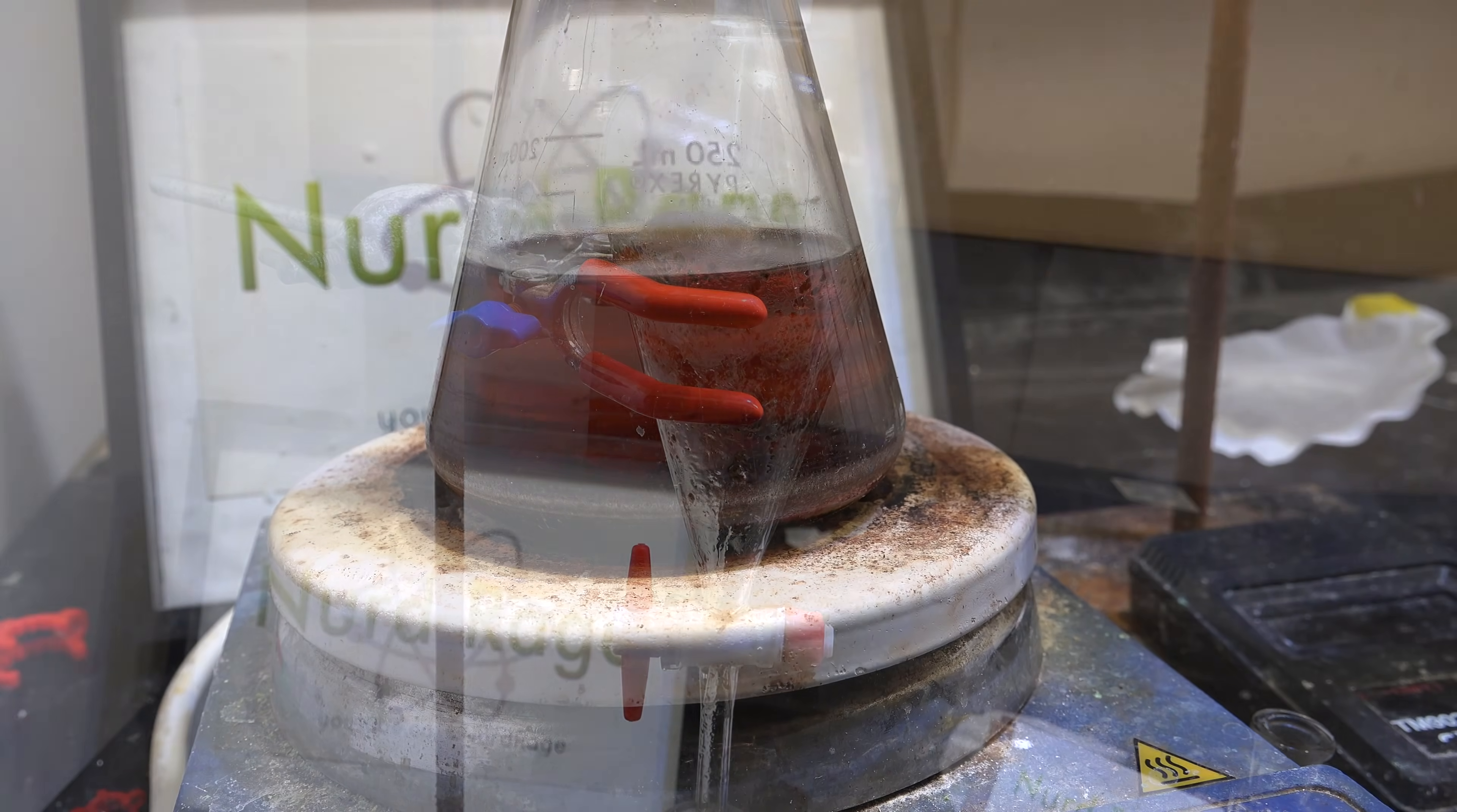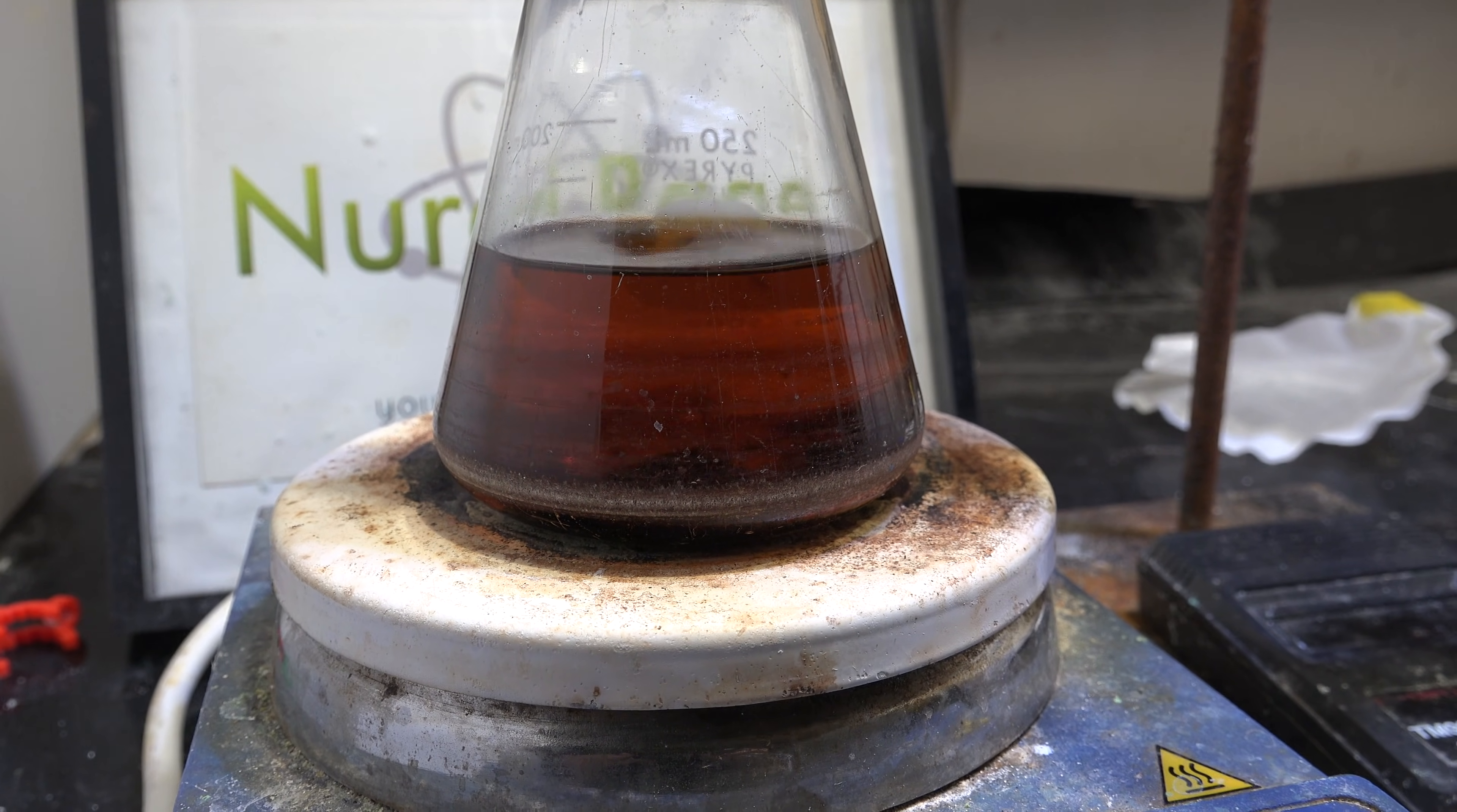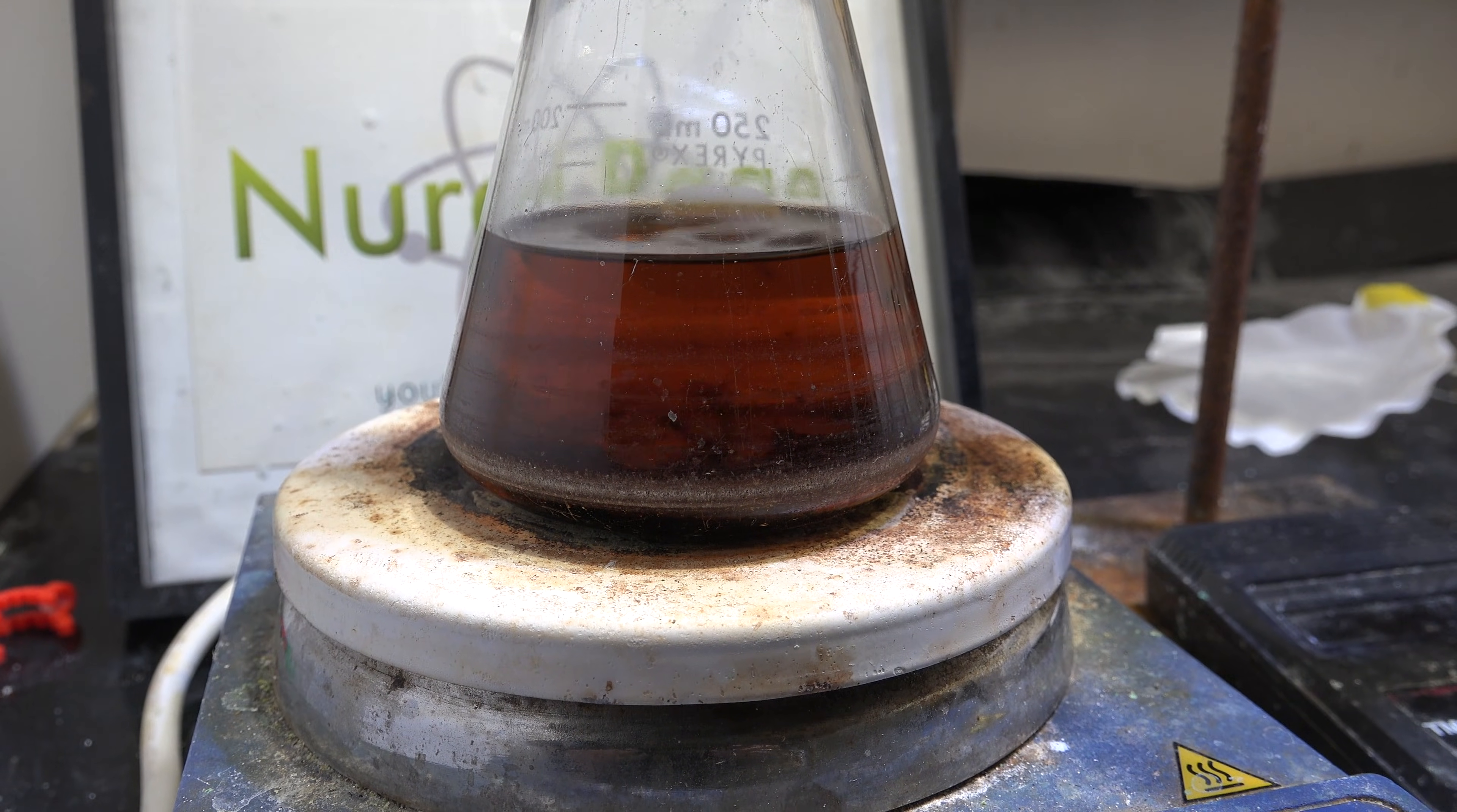And there it is, crude bromohexane. Now our bromohexane is somewhat impure since it wasn't automatically distilled like in bromoethane. So we'll need to distill it now. Set up a distillation apparatus.